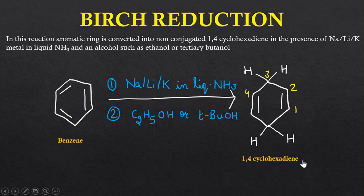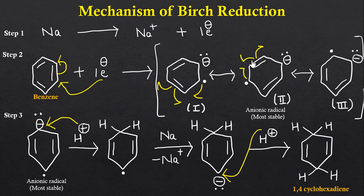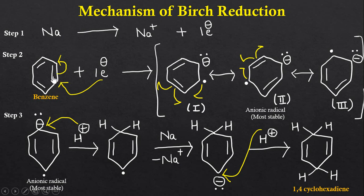Now let us discuss the mechanism of this reaction. First, sodium loses one electron and is converted into sodium plus, releasing one electron. This electron is added to the aromatic ring. Since three equal double bonds are present in the benzene ring, any of them can break. Here, one double bond breaks, the pi electrons shift toward one carbon atom, and the electron is added to that carbon atom, giving us the first structure.